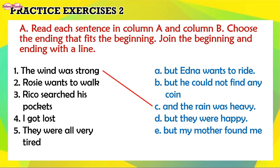2. Rosie wants to walk — A. But Edna wants to ride. 3. Rico searched his pockets — B. But he could not find any coin.